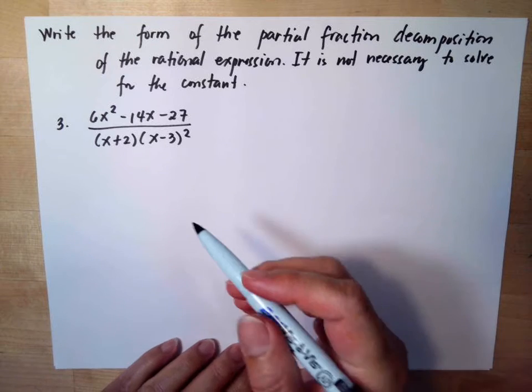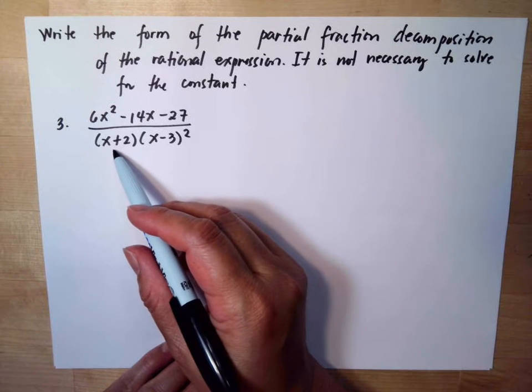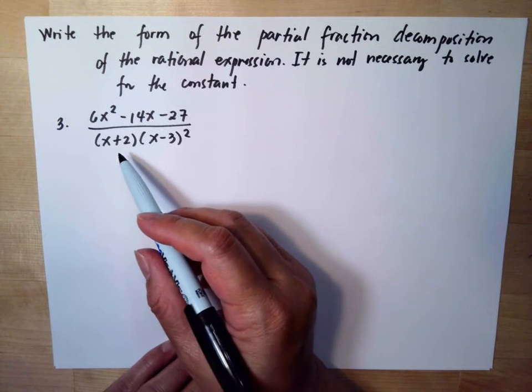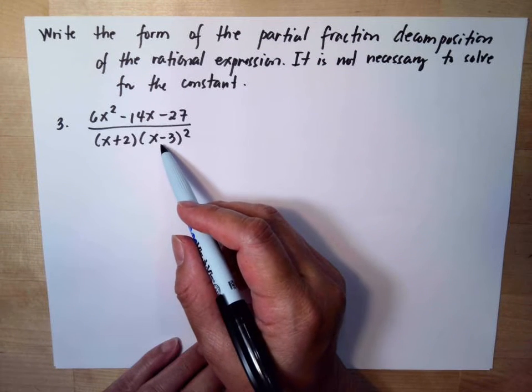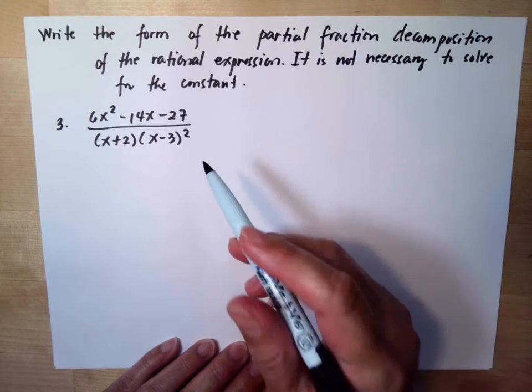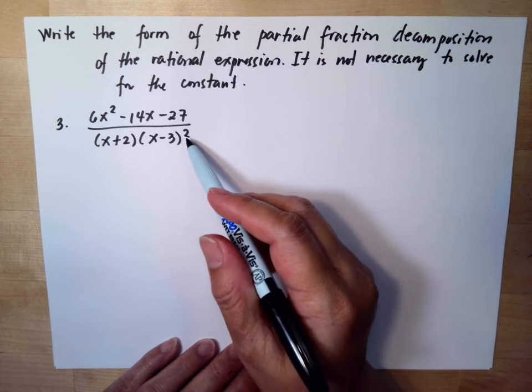Here what you need to do is you need to look at the denominator. So we will have x plus 2, x minus 3, and x minus 3. So we will have 3 because this is to the second power.